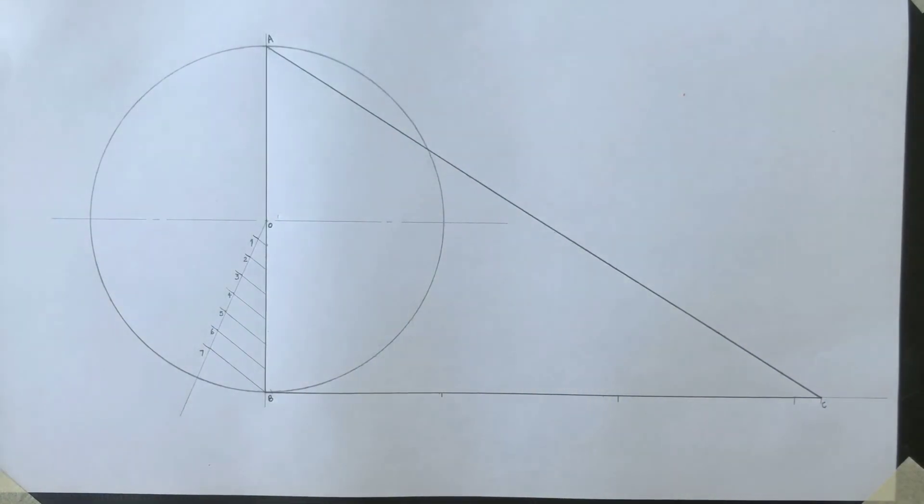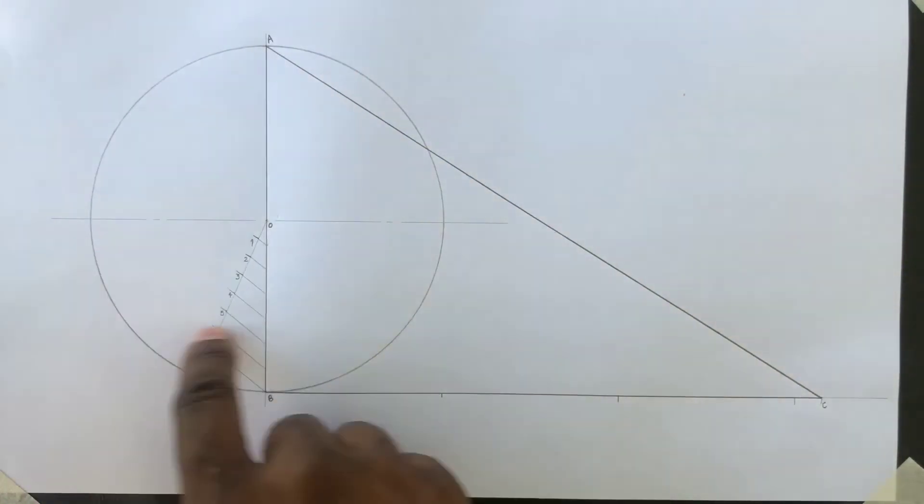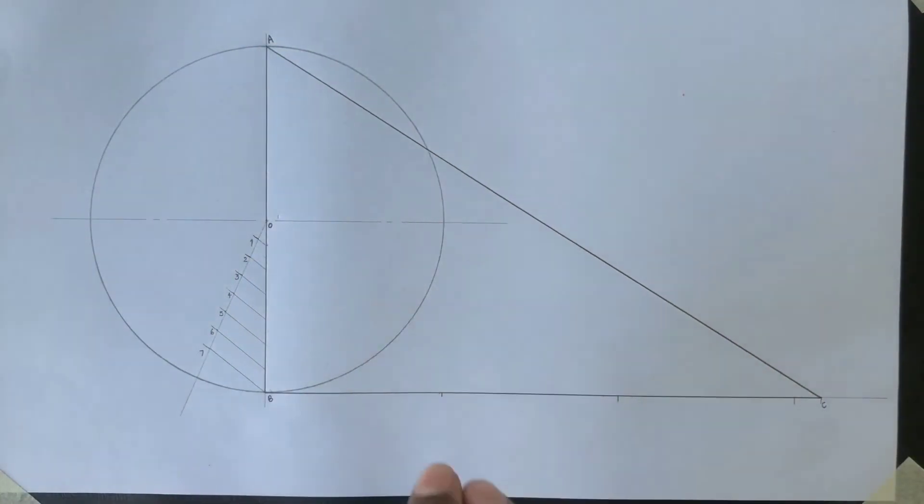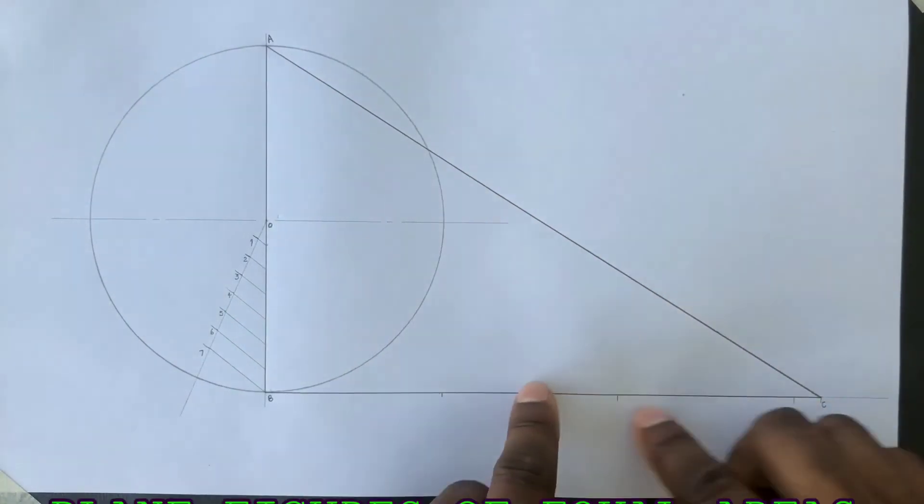These calculations have just confirmed that your circle and your triangle have the same area.